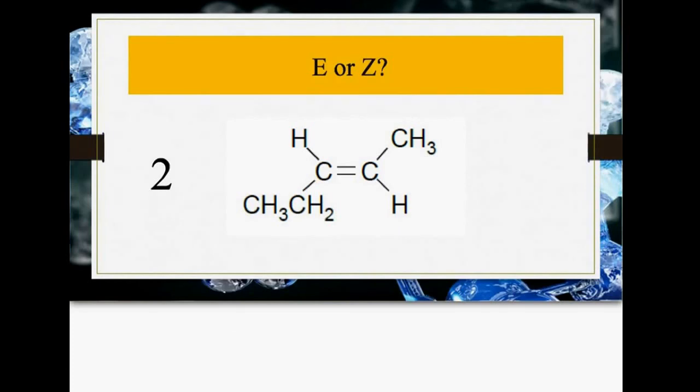Pause the video and have a go. You should have come up with this one is E because the groups are on opposite sides. This one's a bit more confusing because we don't have the same thing. The trick is you look at the atom directly attached to the carbons and find their atomic number. Carbon has an atomic number of 6, hydrogen is 1. The one with the highest atomic number gets priority. Both the high-priority ones are on opposite sides, so that's why it's E.